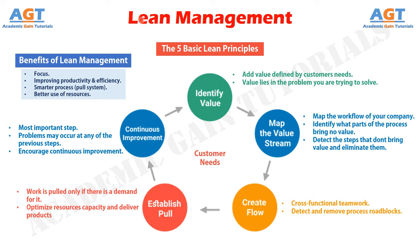To summarize: lean management is more like a guide for building a stable organization that evolves constantly and helps to identify actual problems and remove them. The main purpose of lean management is creating value to the customer by optimizing resources. Lean management principles aim to create a stable workflow based on actual customer demand, and continuous improvement is a major part of lean management, ensuring that every employee is involved in the process of improving.